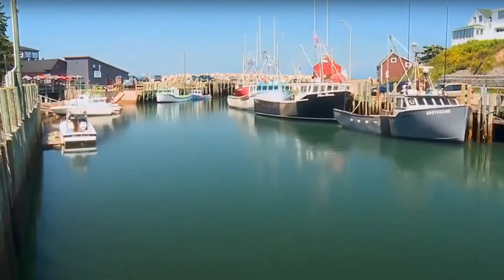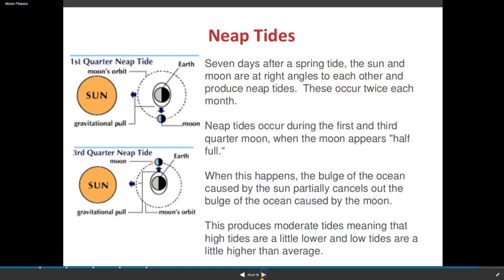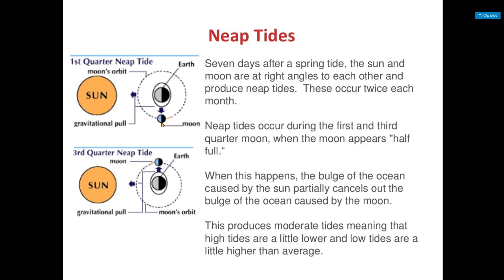Neap tides are the complete opposite. Neap tides are when the sun, moon, and earth form almost an L-shape, and the gravitational pull is being pulled in different directions, so the sun and moon are working against each other. Seven days after a spring tide, the sun and moon are at a right angle to each other and produce neap tides. These occur twice each month, during the first and third quarter when the moon appears half full. The bulge of the ocean caused by the sun partially cancels out the bulge caused by the moon, producing moderate tides where high tides are a little lower and low tides are a little higher than average.